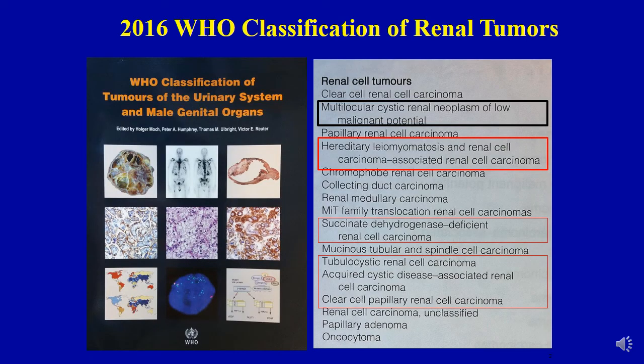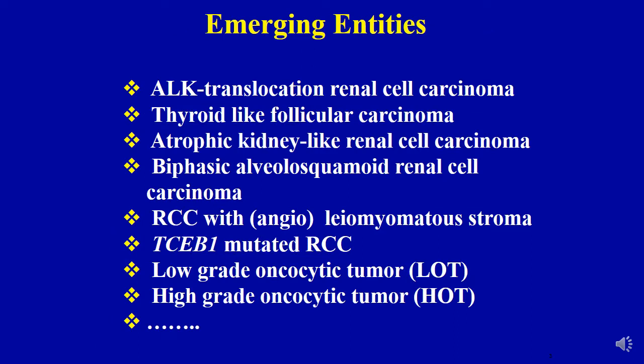The field is quite complex now with increasing understanding of the molecular biology of renal tumors. We have witnessed tremendous progress in the classification of renal cell tumors. Several new entities are now included in the 2016 WHO classification, which I have listed here in these various highlighted boxes. Several entities still have not found a place in the classification — these are termed as emerging or provisional entities.